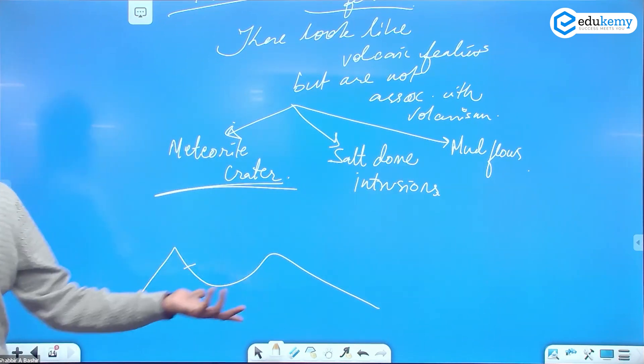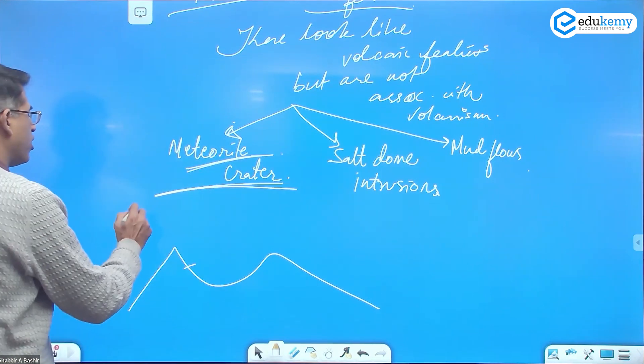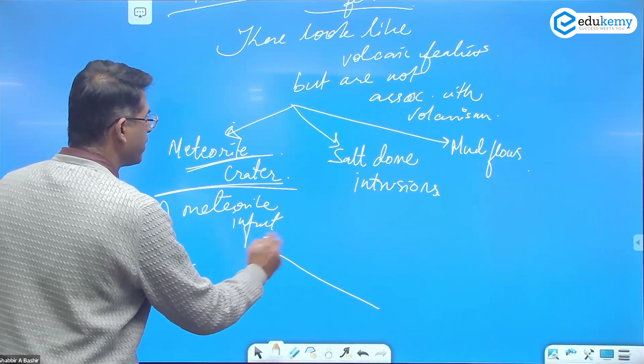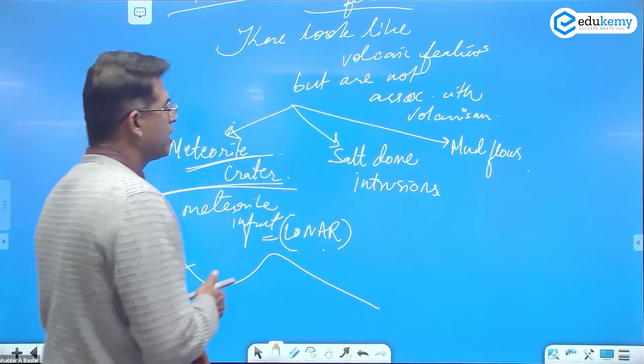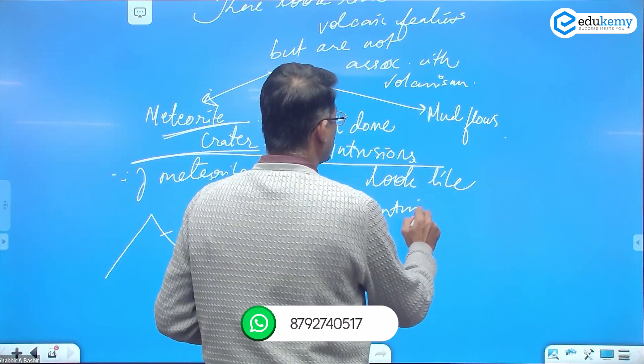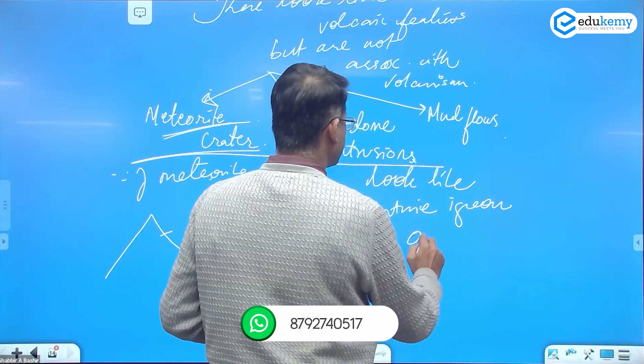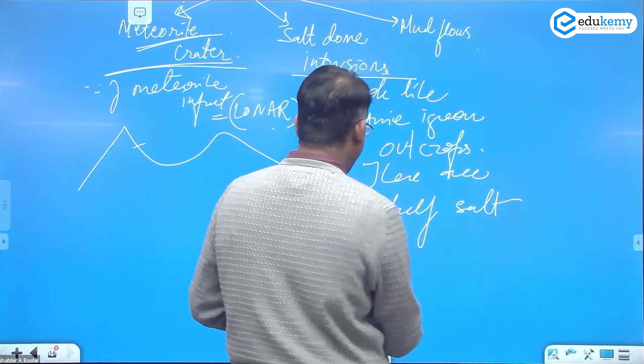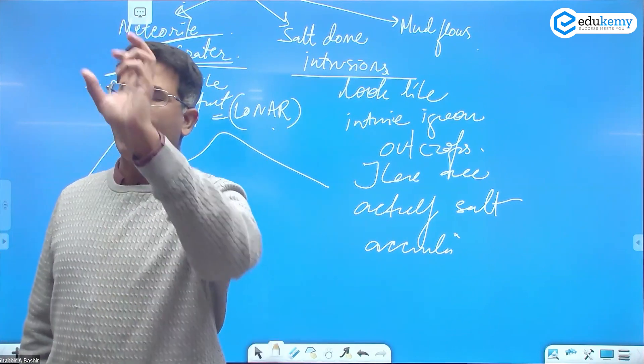So volcanic crater, it's a depression because of impact of meteorite. So it looks like it's a volcanic depression, it is not. As the name suggests, meteorite, so because of meteorite impact, for example.